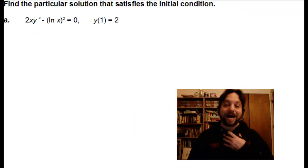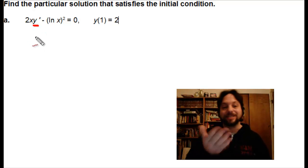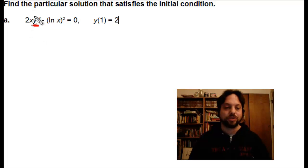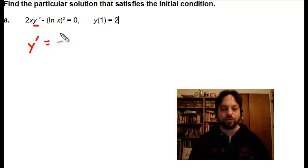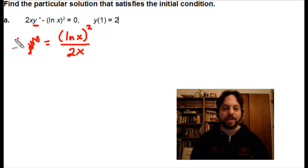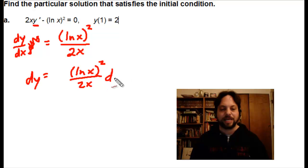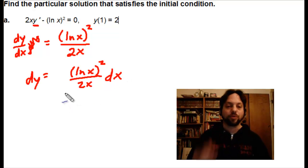In Example A, we have a pretty easy differential equation. We have a y prime, but actually no y's — which makes things easier, because all we need to do is solve for y prime and then integrate to find y. If we set this up, y prime equals the quantity natural logarithm of x squared divided by 2x — just a little bit of algebra. Turning y prime into dy/dx, I can multiply both sides by dx, leaving dy on the left and (ln(x))²/2x · dx on the right.